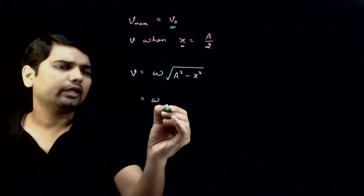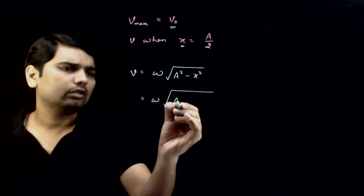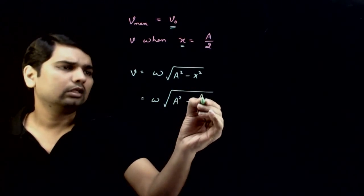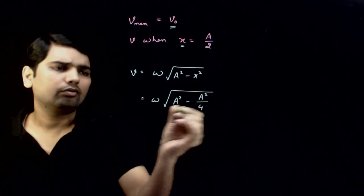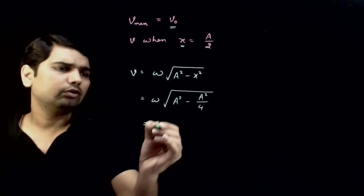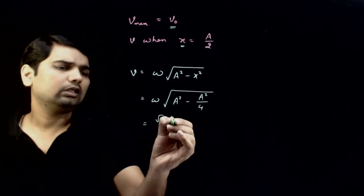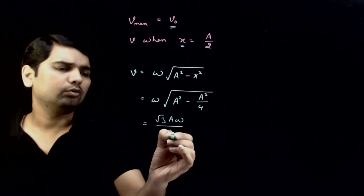Which is equal to omega times under root of a square minus a square by 4, which is equal to root 3 a omega by 2.